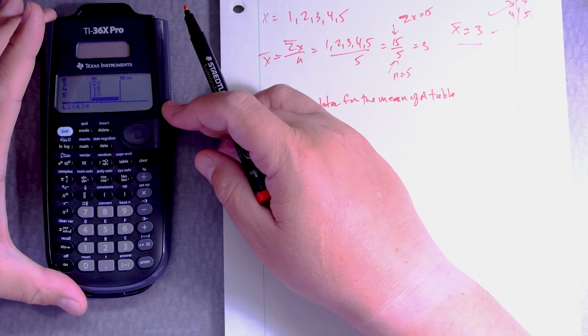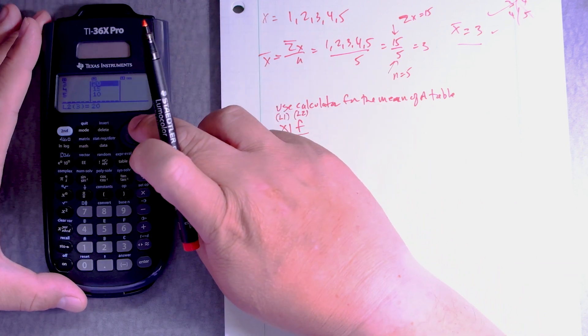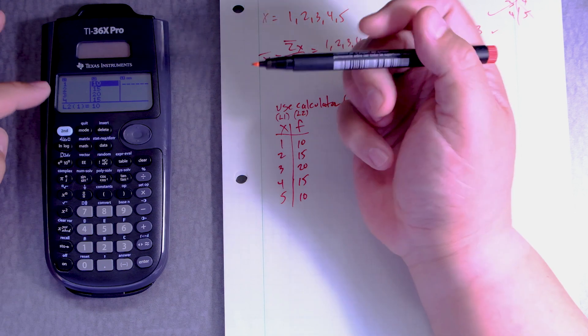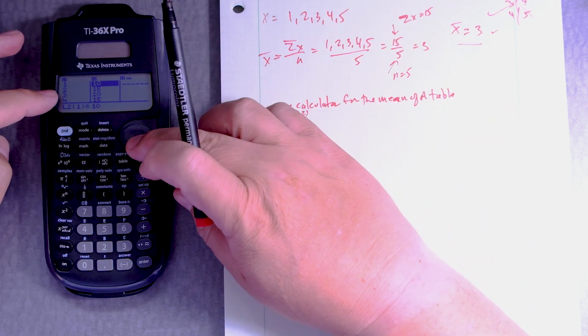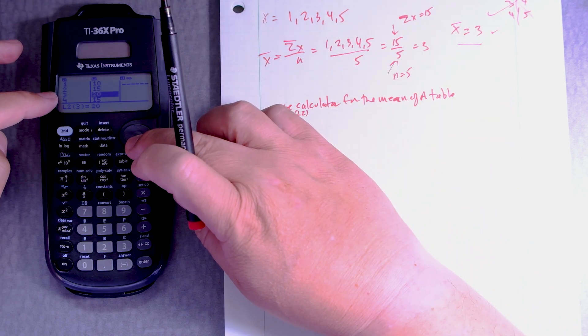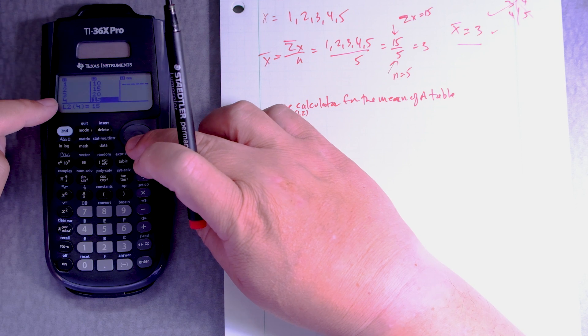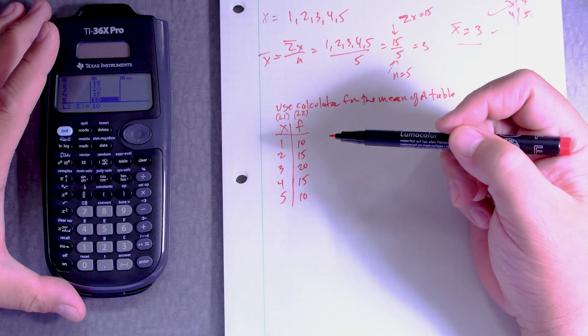Always good idea to check to see if the numbers are in there correctly, right? 1 and 10, 2 and 15, 3 and 20, 4 and 15, 5 and 10. Looks great.